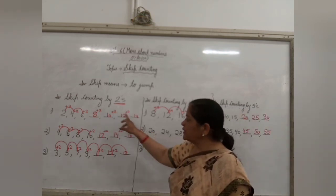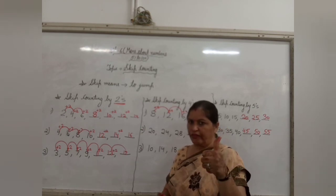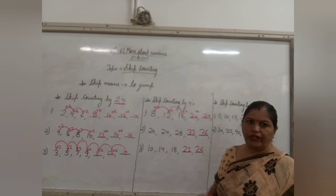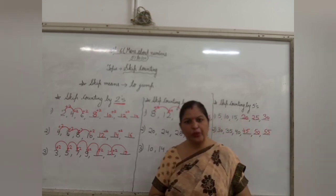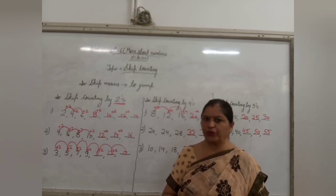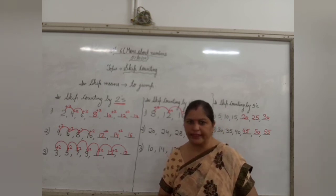Either you can add plus on the paper only or either you can count in the fingers and write down the number. Whatever skip counting number is given to you, you have to jump that number. I hope children it is clear to you. Now related to that only children, I have uploaded one worksheet which you have to do in your maths notebook. Thank you children. That's all for today. Thank you and have a nice day.